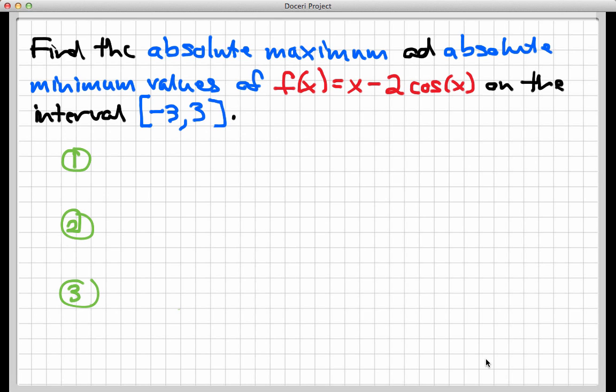Hi, and welcome to this video where we're going to put to work what we learned about global optimization. We're going to find the absolute maximum and absolute minimum values of the function f(x) = x - 2cos(x) on the interval from -3 to 3.